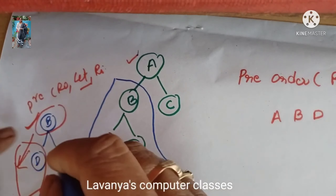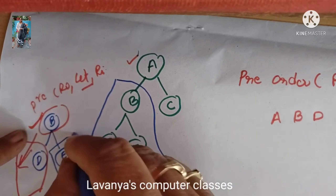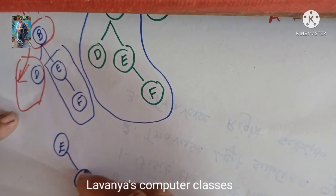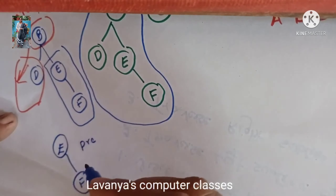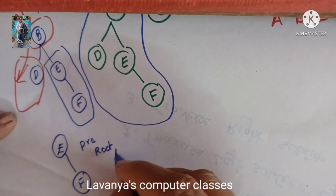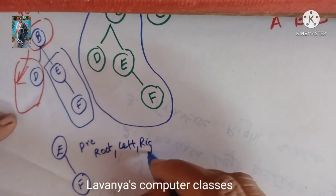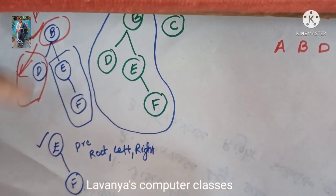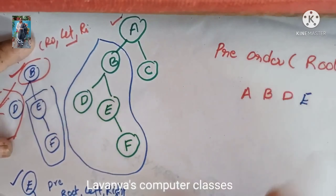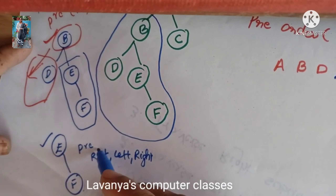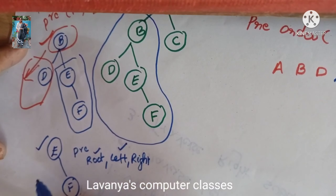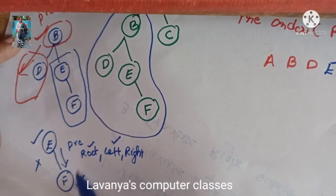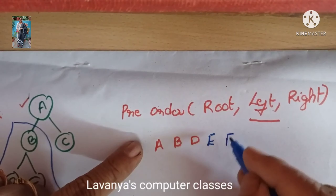Root B is over and left D is over. Then go to the right-hand side of B. The right-hand side sub-tree contains E and F. Apply pre-order: root is E, write E. There is no left child of E. Go to the right-hand side, which is F. Write F.